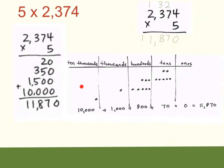Now let's take our partial products and put them into our place value chart. We have 20, represented in the ones and tens columns. Then 350 — that's 3 hundreds, 5 tens, and 0 ones. Then 1,500 — that's 1 thousand, 5 hundreds, 0 tens, and 0 ones. And finally 10,000, so just one 10,000 and zeros for the rest. Adding together: 2 plus 5 gives 7 tens; 3 plus 5 gives 8 hundreds; plus 1,000 and 10,000. Add all these together and you arrive at 11,870.